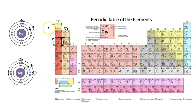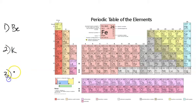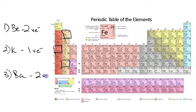So for elements in the same group, the only thing that changes as you move down in terms of valence electrons is the energy level that the valence electrons are found on. As a quick review for groups one and two, pause the video, then determine the number of valence electrons for beryllium, potassium, and barium. Beryllium is in group two, so it has two valence electrons. Potassium in group one has one valence electron, and barium in group two has two valence electrons.